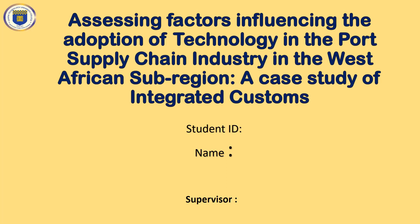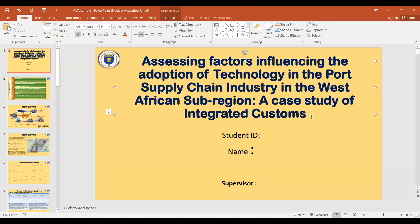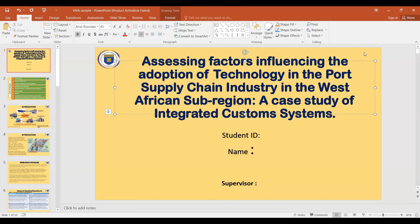This example topic is 'Assessing factors influencing the adoption of technology in the port supply chain industry in the West African subregion: a case study of integrated customs systems.' Now looking at the slide, the font size is 43. There may not be a hard rule, but your topic should project well. Include the university logo — here we have GCTU; if you're doing another program put that logo here.